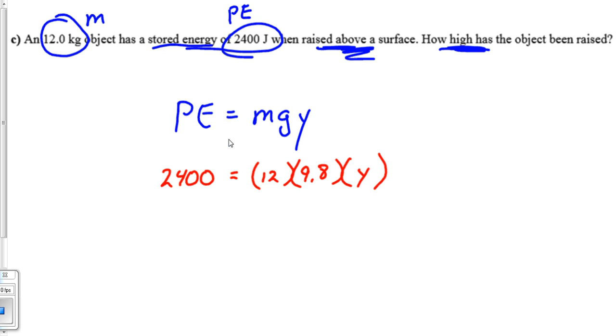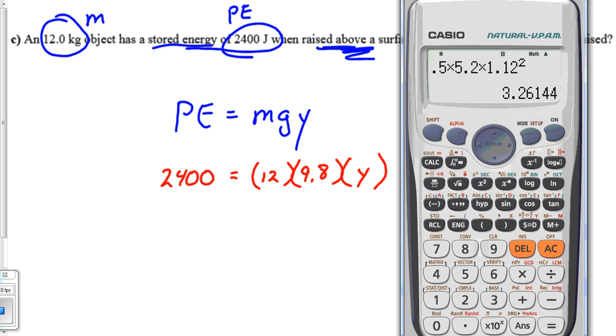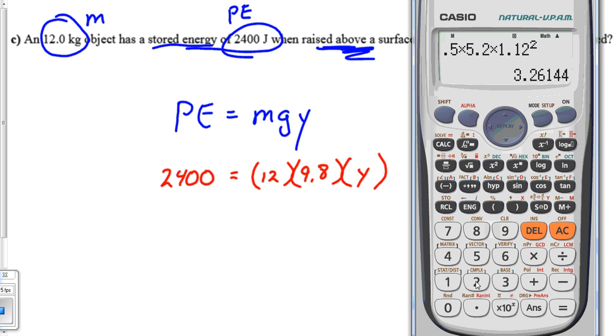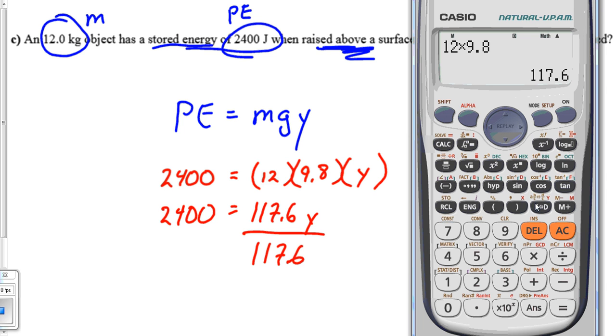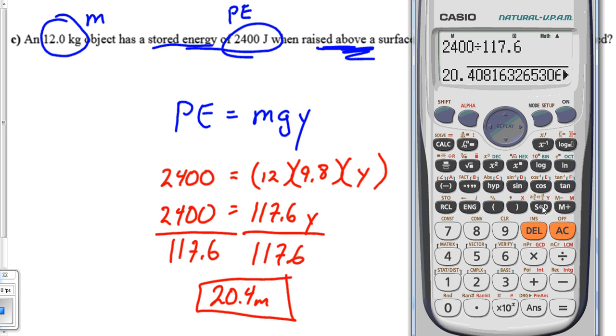About the only way we could mess this problem up would be in the math. So this is going to be 2,400 equals 12 times 9.8 times Y. Algebraically, what do we need to do? We need to multiply the 12 and the 9.8 first. So 12 times 9.8 is 117.6. That's 117.6 Y. And now to finish the problem, divide both sides by 117.6. So 2,400 divided by 117.6 equals, this object was raised 20.4 meters into the air.